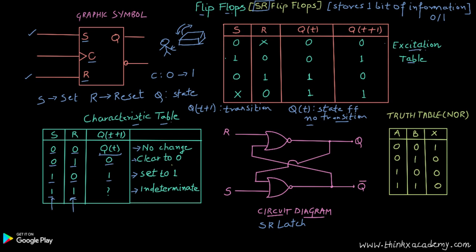Here I have given the excitation table. The excitation table simply represents the inputs of S and R — before the clock transition and after the clock transition. After the clock signals from zero to one, we look at how the outputs change.